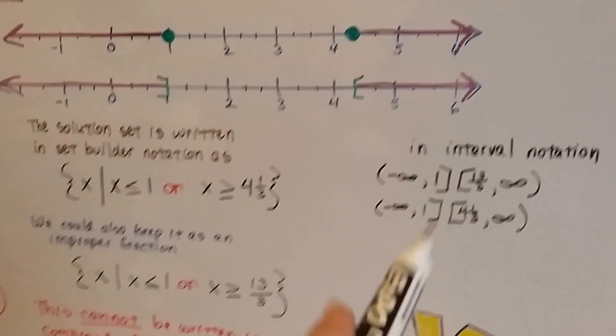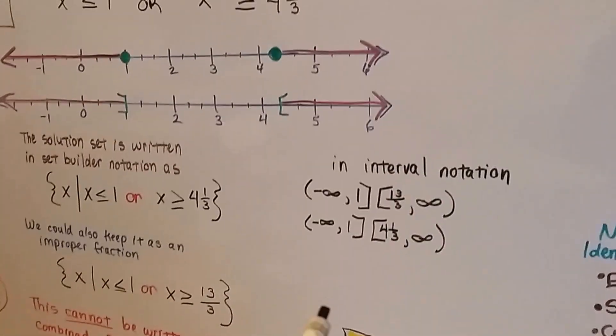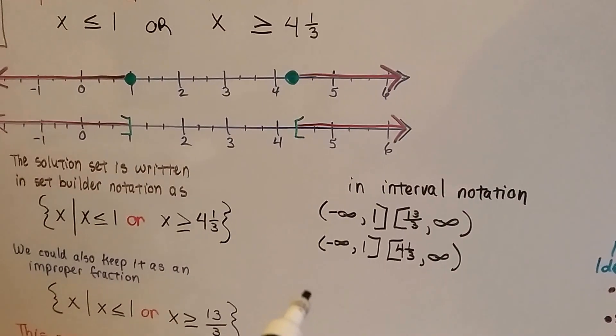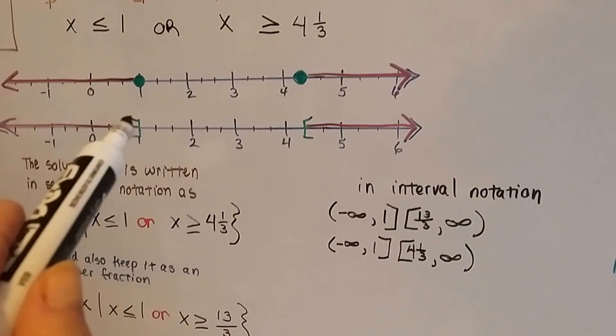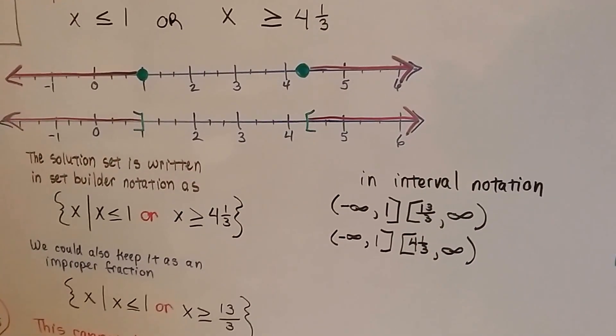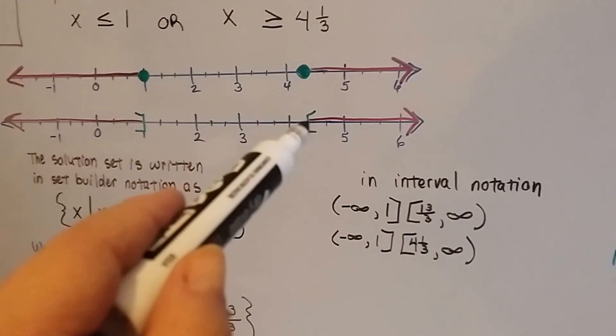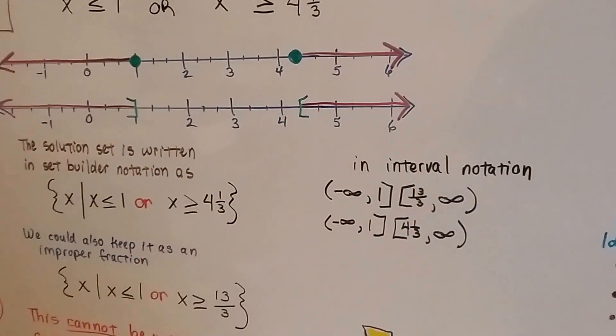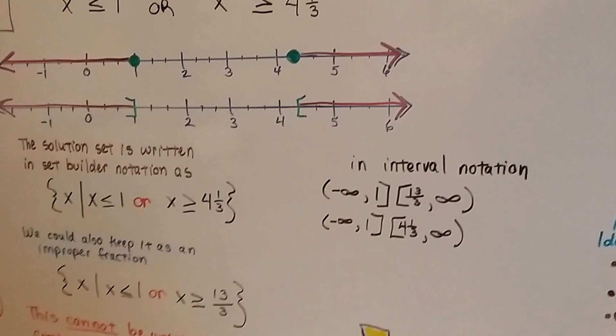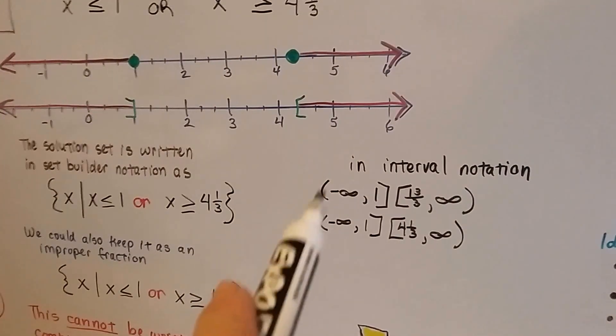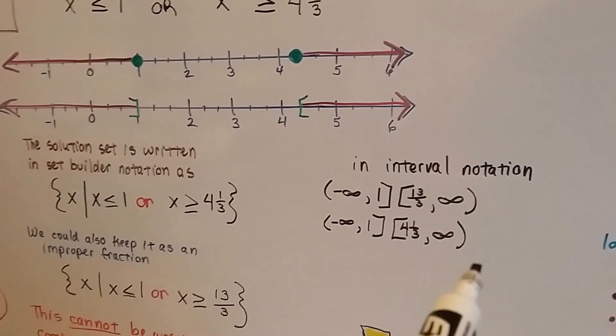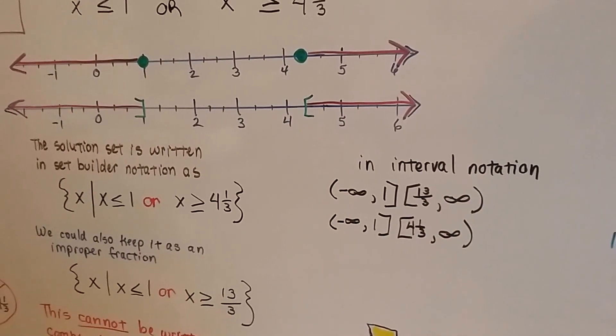Now in interval notation, if you wanted to write your solution in interval notation, for those of you who are a little bit farther ahead, because of this box bracket going this way into negative infinity and this box bracket going to the right into positive infinity, that's how we would write our solution in interval notation. Just remember that infinity never has a bracket next to it, it always has a parentheses.